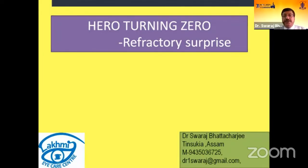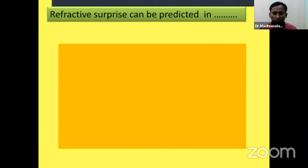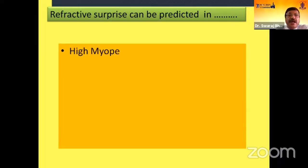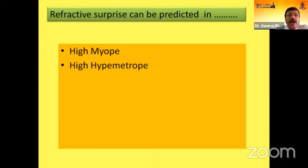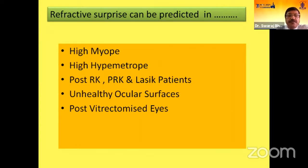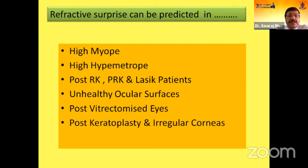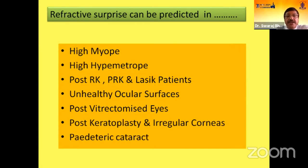The topic is HERO turning zero — the refractory surprise. There is no financial interest. Refractive surprise can be predicted in high myopes, high hypermetropes, HRK, PRK and LASIK patients, unhealthy ocular surface, most vitrectomized eyes, most keratoplasty and irregular cornea, and pediatric cataract.